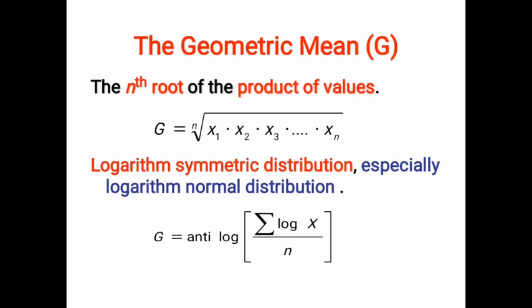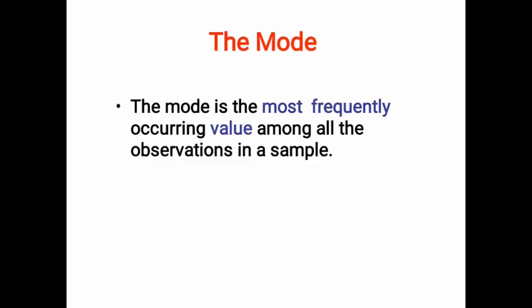The last measure of central tendency is the mode. It is the most frequently occurring value among all the observations in a sample. You just need to find out the most frequently occurring value and treat it as the mode.